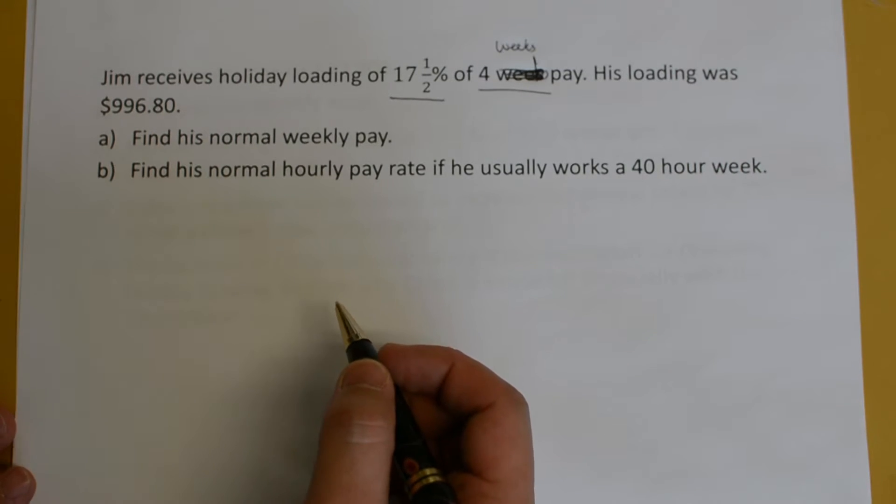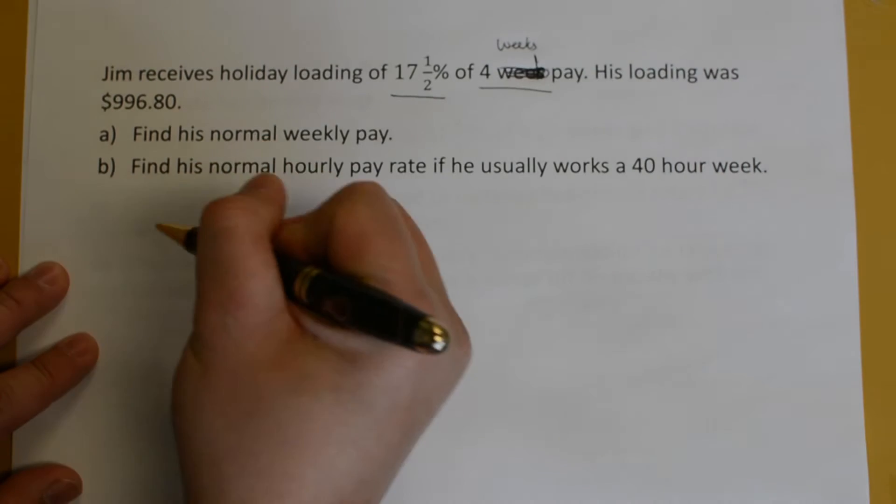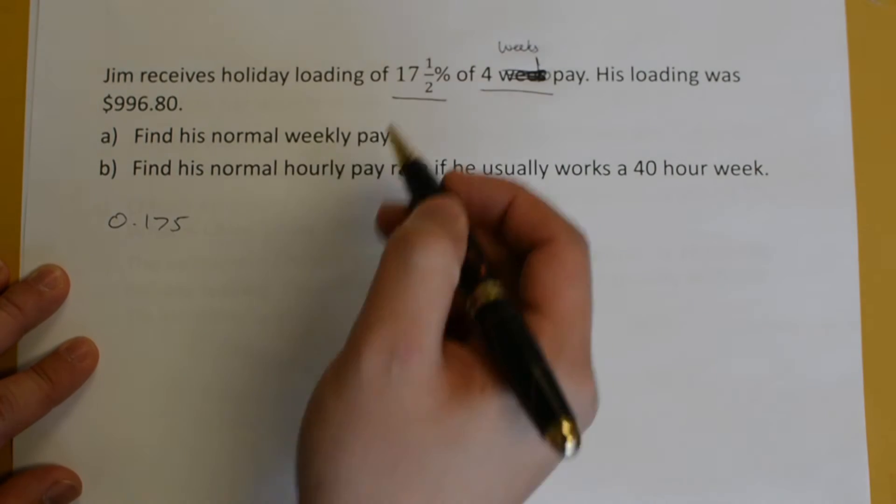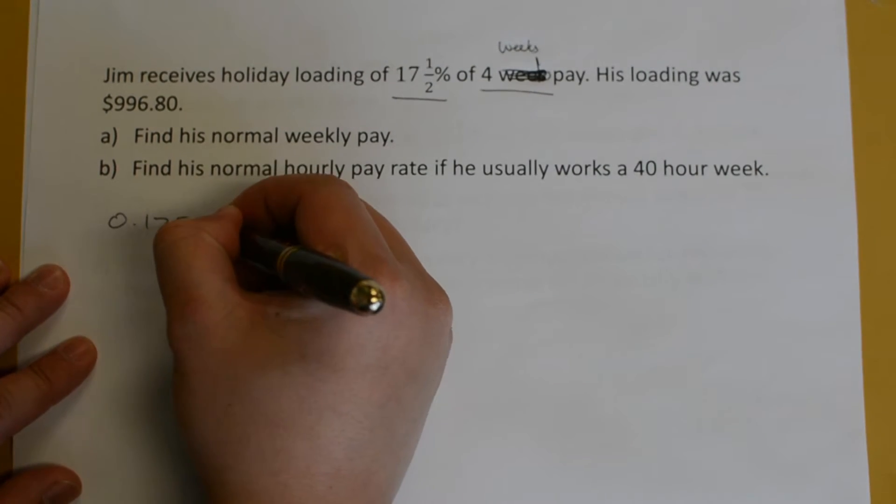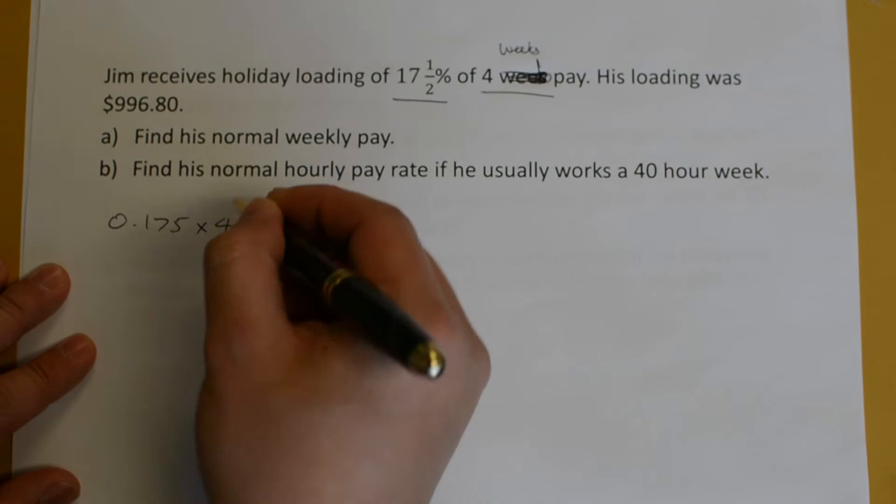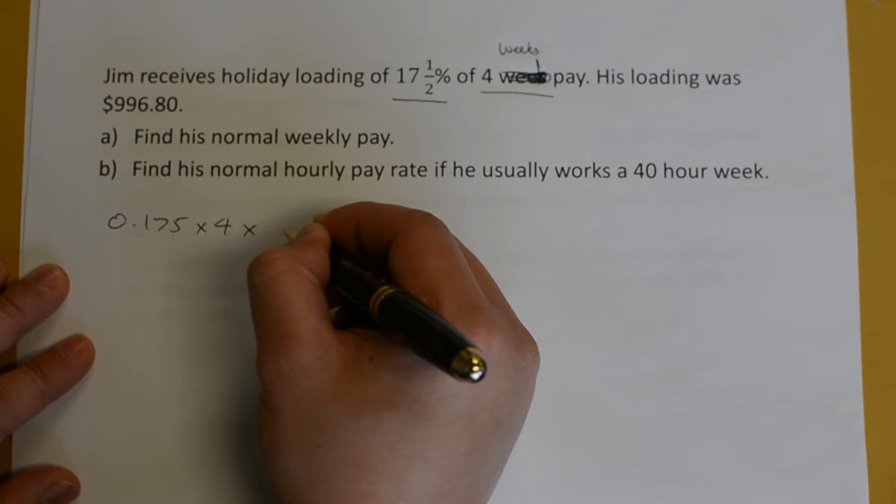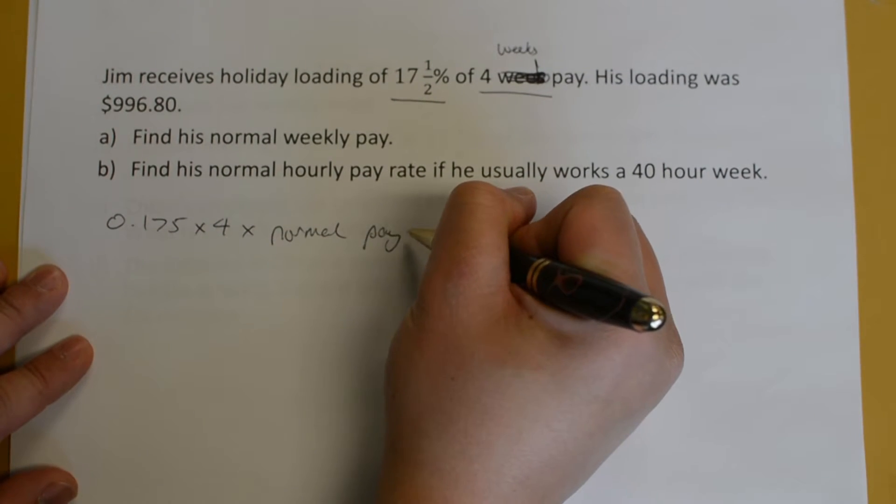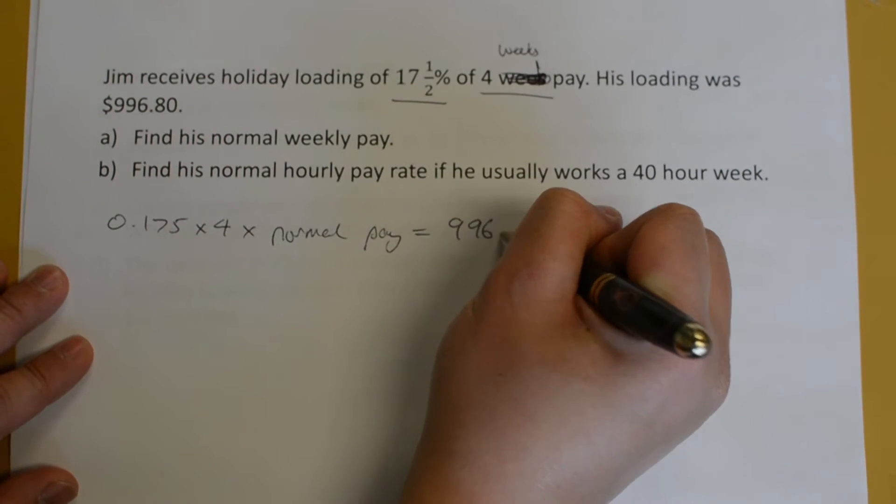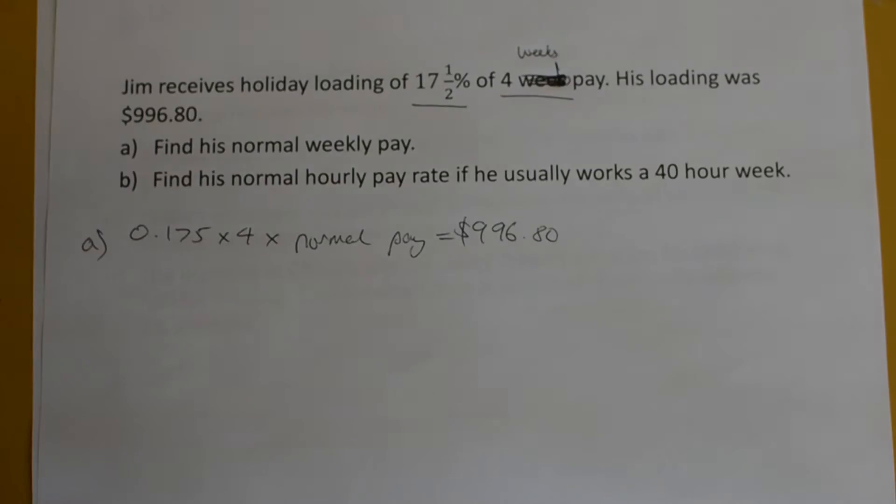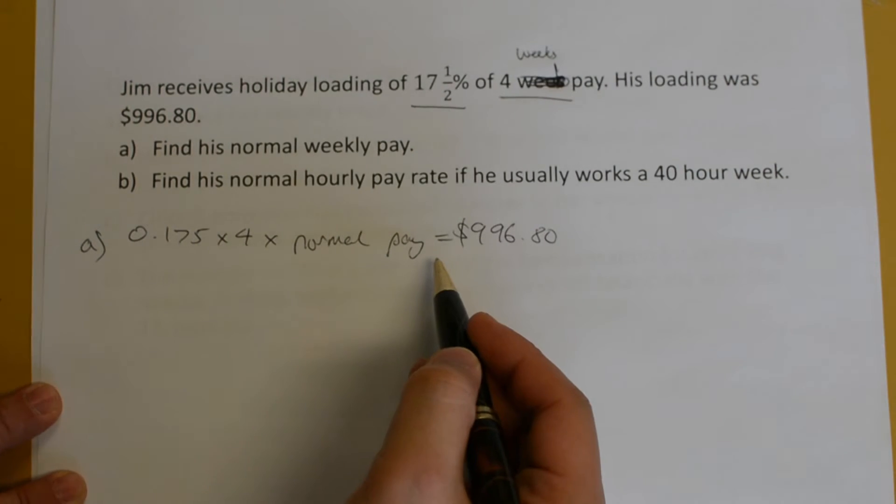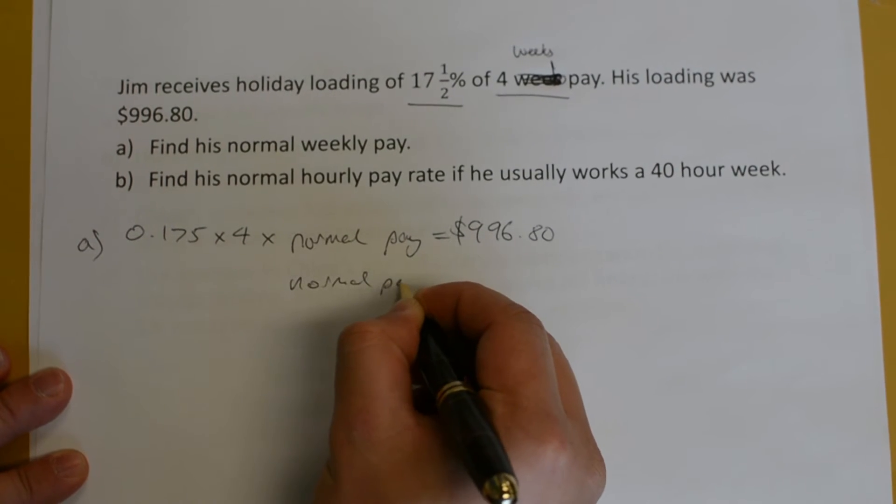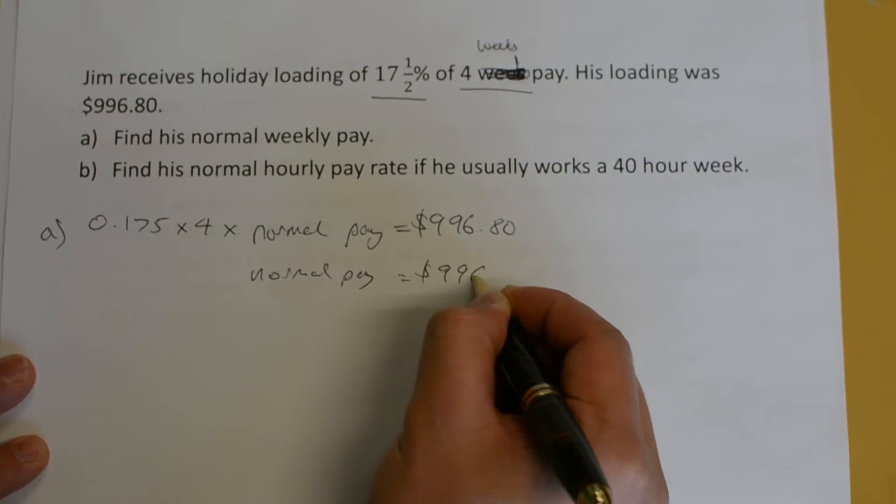Find his normal weekly pay. Well, if his holiday loading was 0.175, which is the 17.5%, and that's over four weeks, that will be multiplied by his normal pay. That would be $996.80. So now that we've figured out how to calculate his normal pay, we need to then solve it.